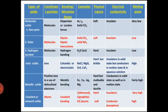The third type is metallic solid. The constituent particles are positive ions in a sea of delocalized electrons. The binding force is metallic bonding. Examples: copper, silver, iron, magnesium. Physical nature: hard but malleable and ductile. Electrical conductivity: conductors in both solid state and molten state. Melting point: fairly high, due to strong metallic bonding.